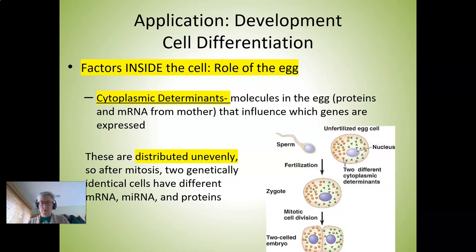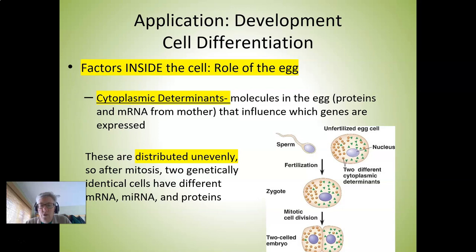In this picture on the right, you see an unfertilized egg cell where different shapes — a red circle and a green triangle — symbolize two different determinants in the cytoplasm. When sperm fertilizes the egg, we have a zygote, and those green triangles and red circles are not evenly distributed. After cell division, we have a two-celled embryo, and clearly those cytoplasmic determinants were not evenly distributed into those two daughter cells. So genetically identical cells have the same DNA but different sets of mRNA, microRNAs, and proteins — and this has a big influence on what happens in each cell type.